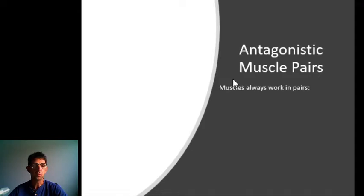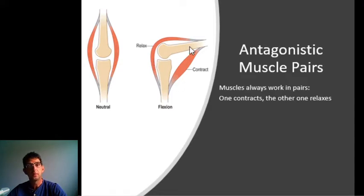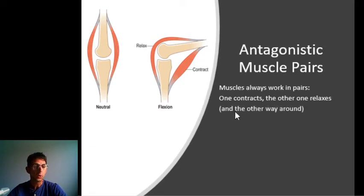For example, if this muscle contracts and this one relaxes, then this joint will move that way. But the other way around as well — if this muscle relaxes and this one contracts, then he will straighten out again.